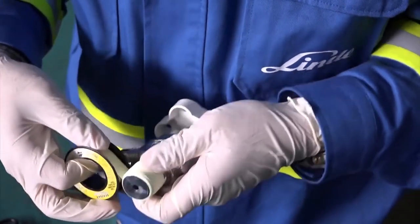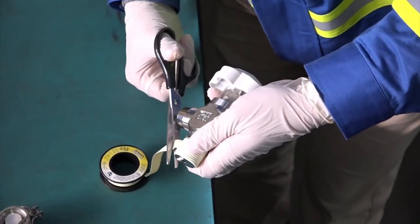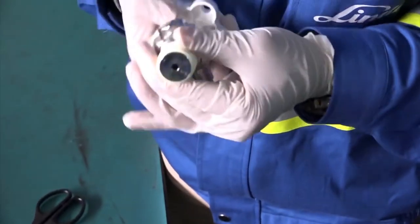Finish wrapping with one full turn around the large end and cut the tape. Carefully push the tape into the thread profile.